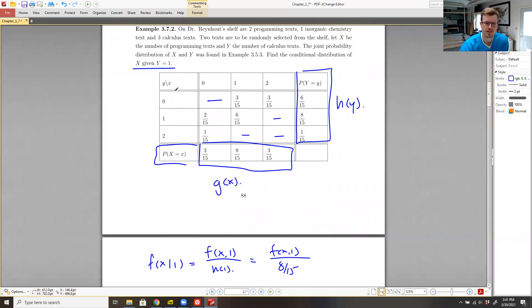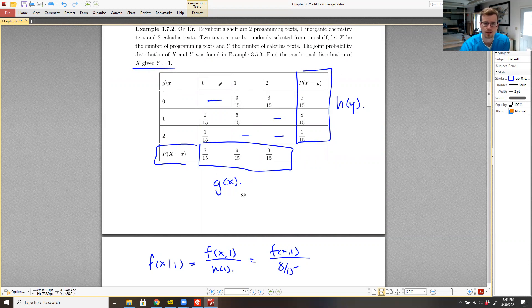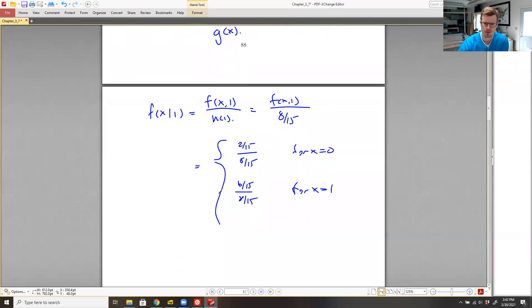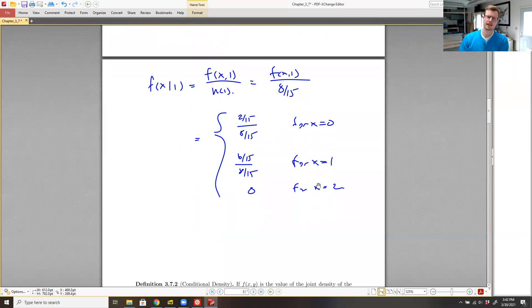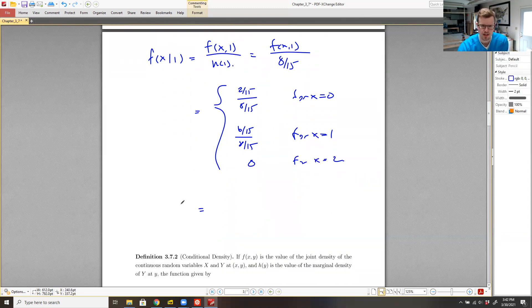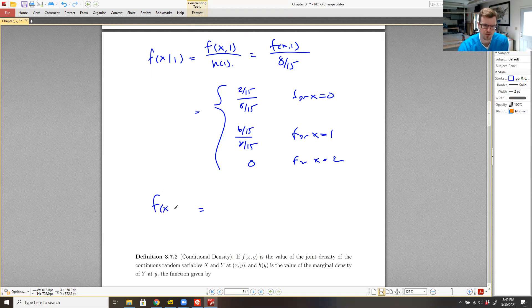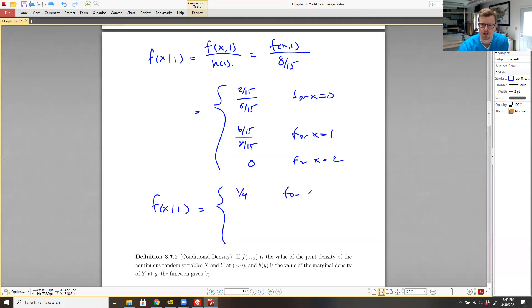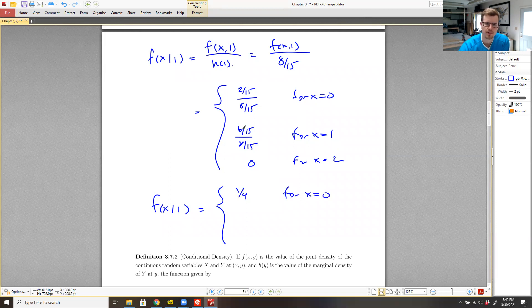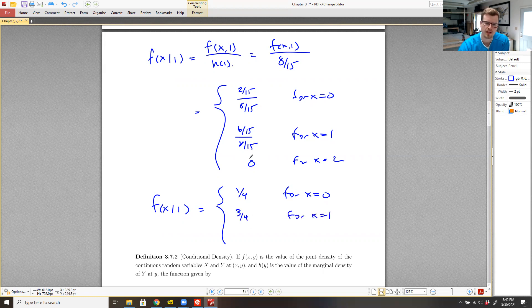And then finally, when x is equal to two, we have zero as a probability. So zero for x equal to two. And of course, I can simplify those fractions. So that way, our conditional distribution of x, given that y is equal to one, is exactly two eighths, or one quarter, for x equal to zero. Six eighths, or three quarters, for x equal to one. And then zero for x equal to two.